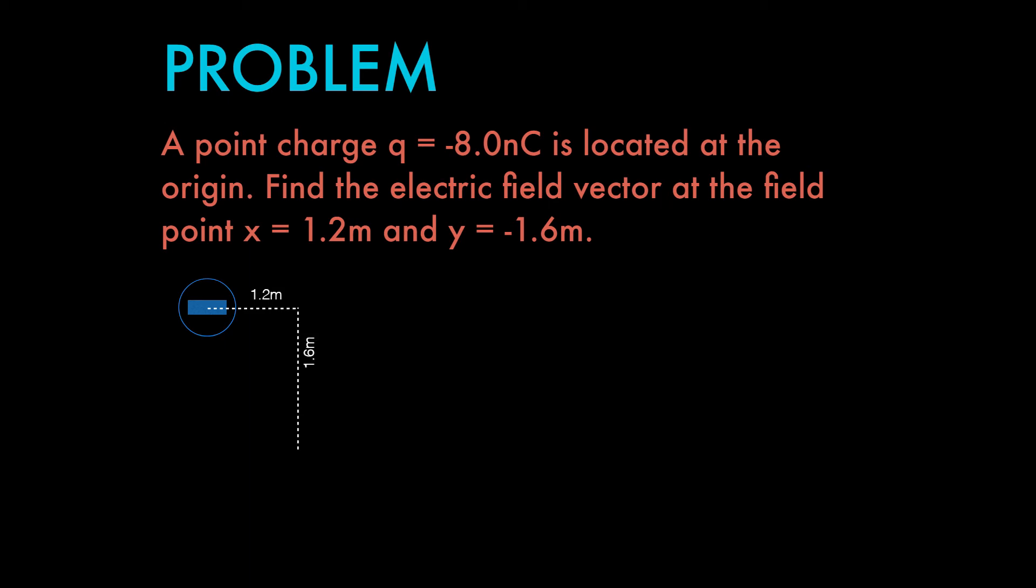Since we know that the source charge is negative, we know that the electric field vector must point in the direction towards the source charge, so we could draw a little vector towards the source charge. That's the green vector I made, that's what we're looking for. Looking back at the question, we're asked to find a single vector so we need a magnitude and we need a direction.